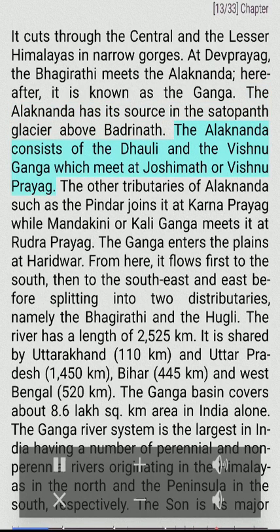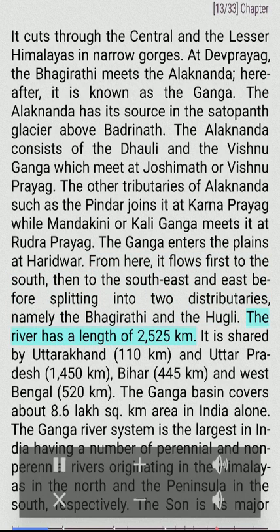The Alaknanda has its source in the Satopanth glacier above Badrinath. The Alaknanda consists of the Dhauli and the Vishnu Ganga which meet at Joshimath or Vishnuprayag. Other tributaries of Alaknanda such as the Pindar join it at Karnaprayag, while Mandakini or Kali Ganga meets it at Rudraprayag. The Ganga enters the plains at Haridwar, from where it flows south, then southeast and east, before splitting into two distributaries — the Bhagirathi and the Hooghly. The river has a length of 2,525 km, shared by Uttarakhand, Uttar Pradesh, Bihar, and West Bengal.